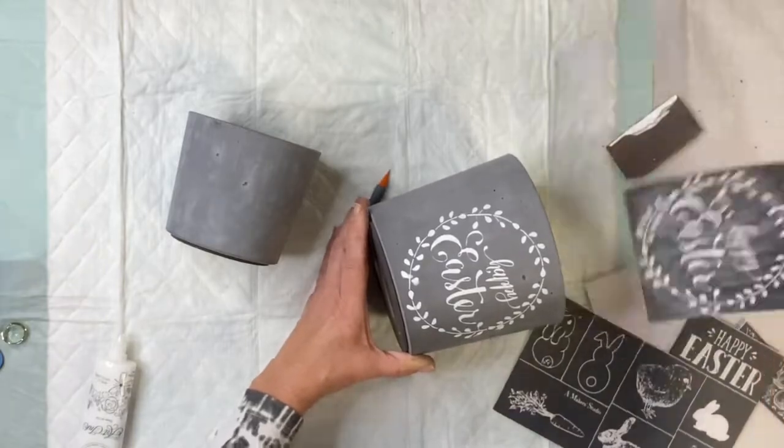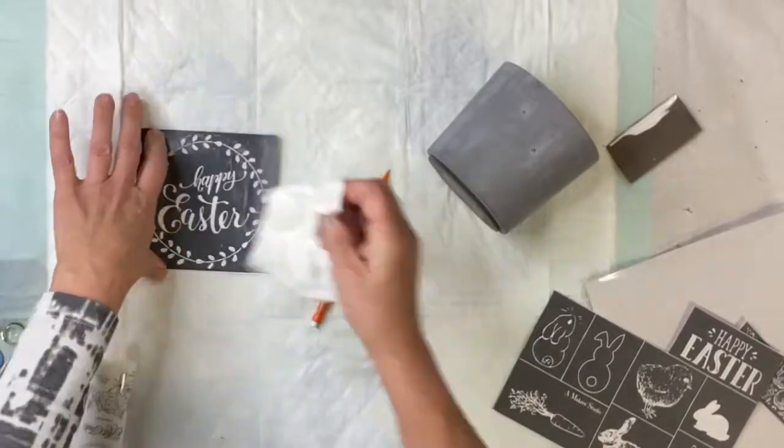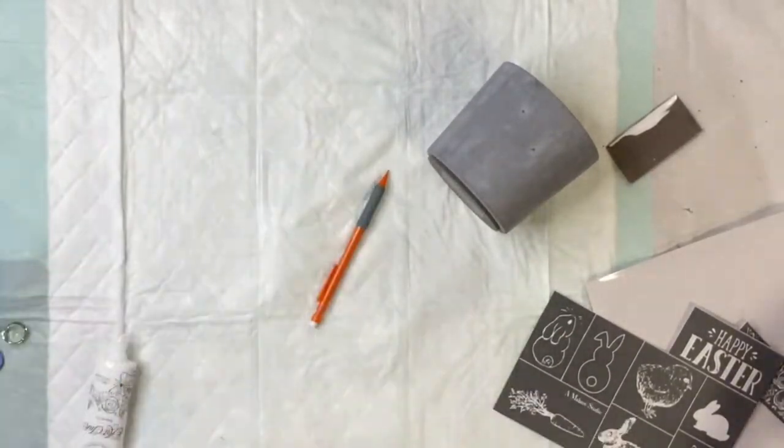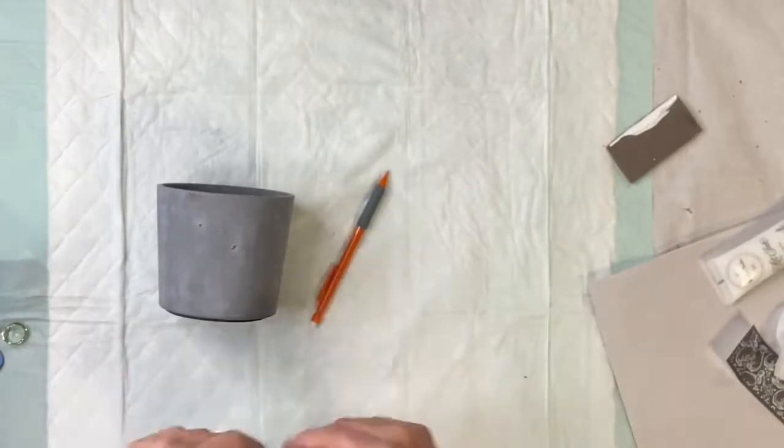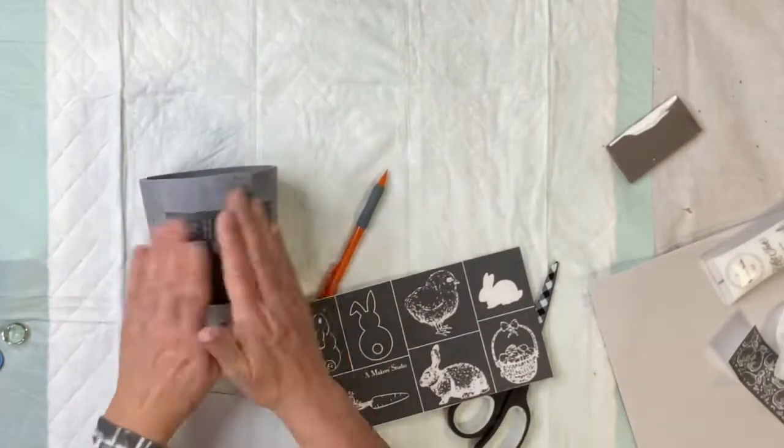Has that cement look with the white—came out so pretty. A lot of times I'll just place my stencil back on its backing and then just wipe it with a baby wipe. That's how I clean it. This one says Happy Easter.